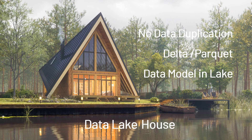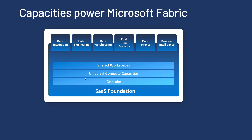But it doesn't come for free — you need capacities, and that makes licensing much easier. With previous data solutions, there were separate costs for Data Factory, SQL, the data lake, and dedicated pools. Now, you subscribe to universal compute capacities used by every workload. Data integration, data engineering with Spark, data warehousing, and even Power BI all share and use those compute capacities.